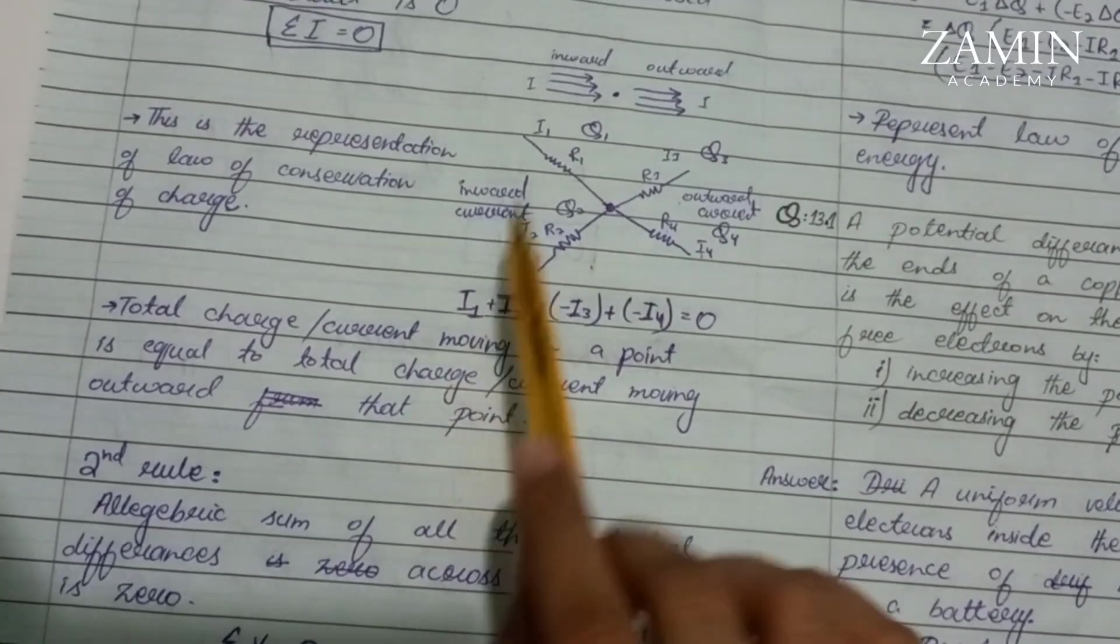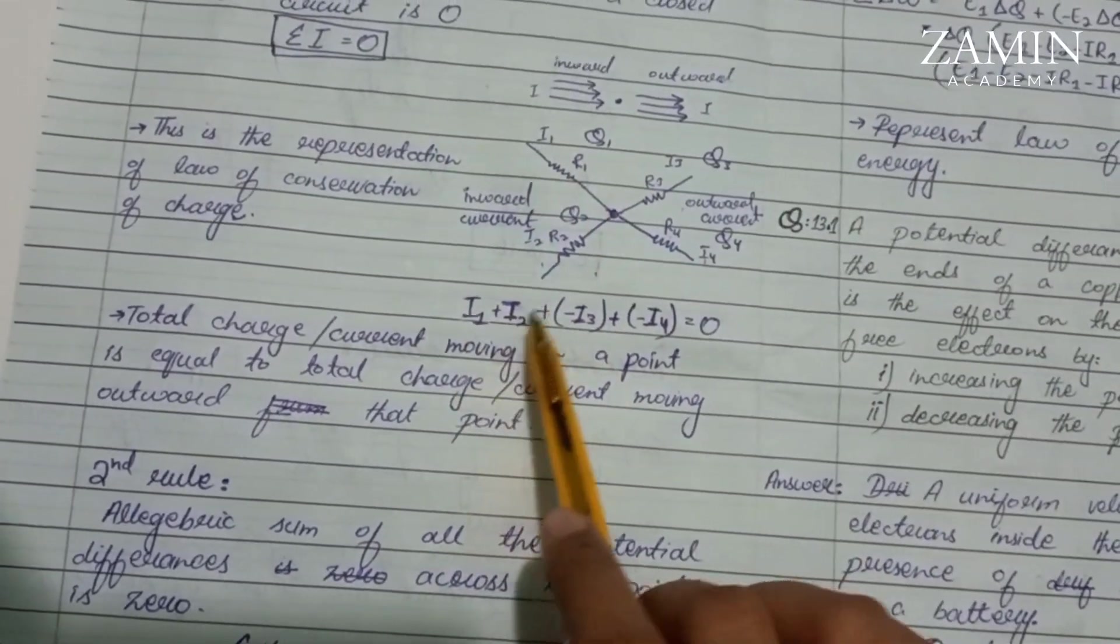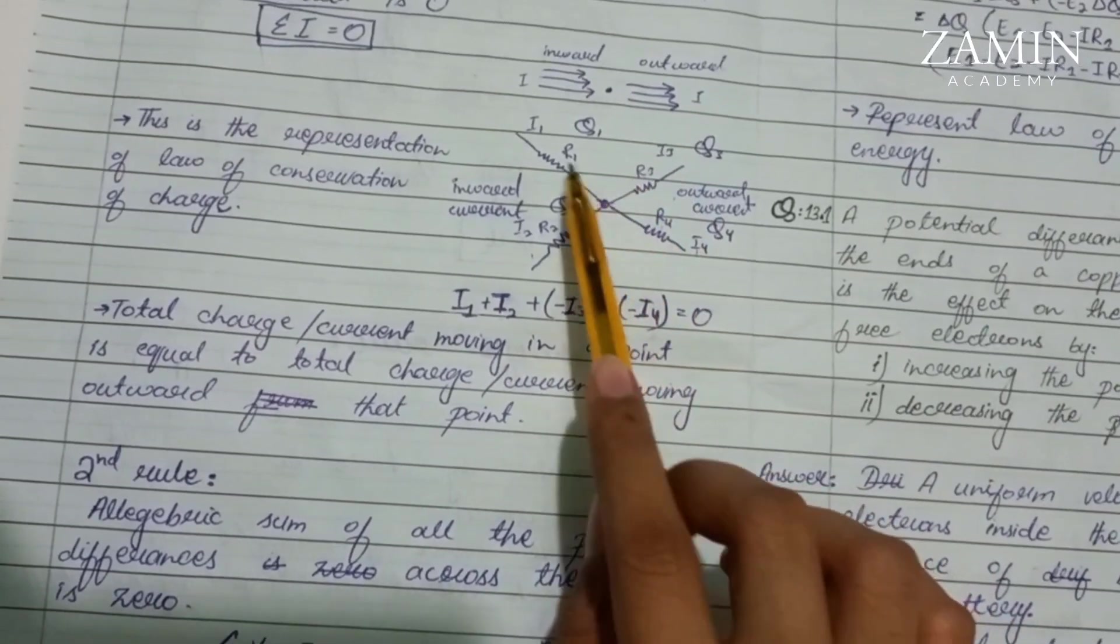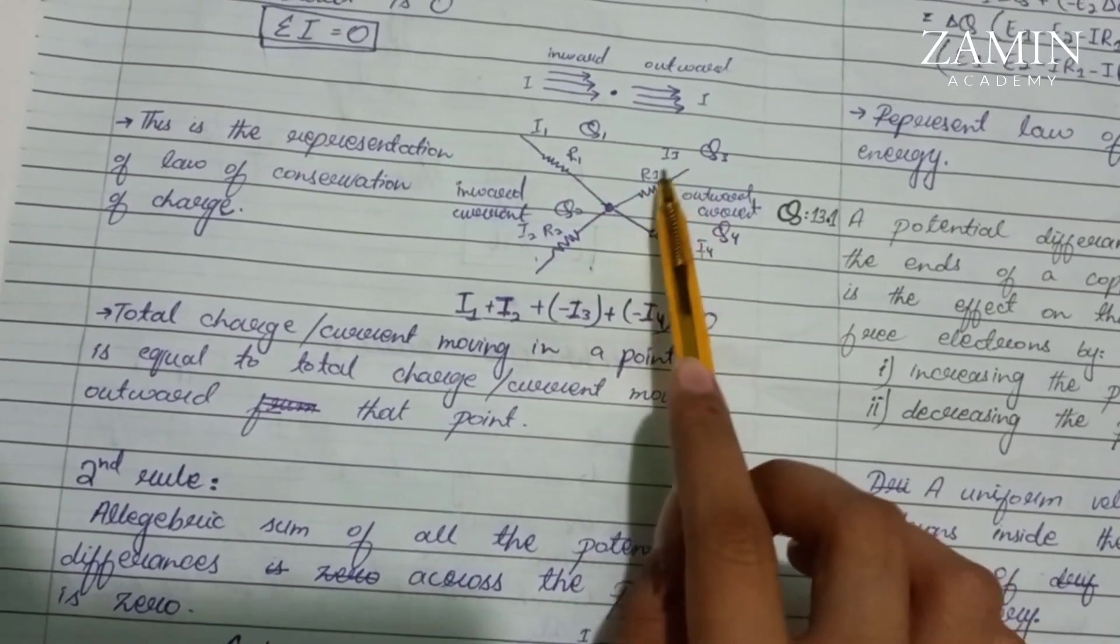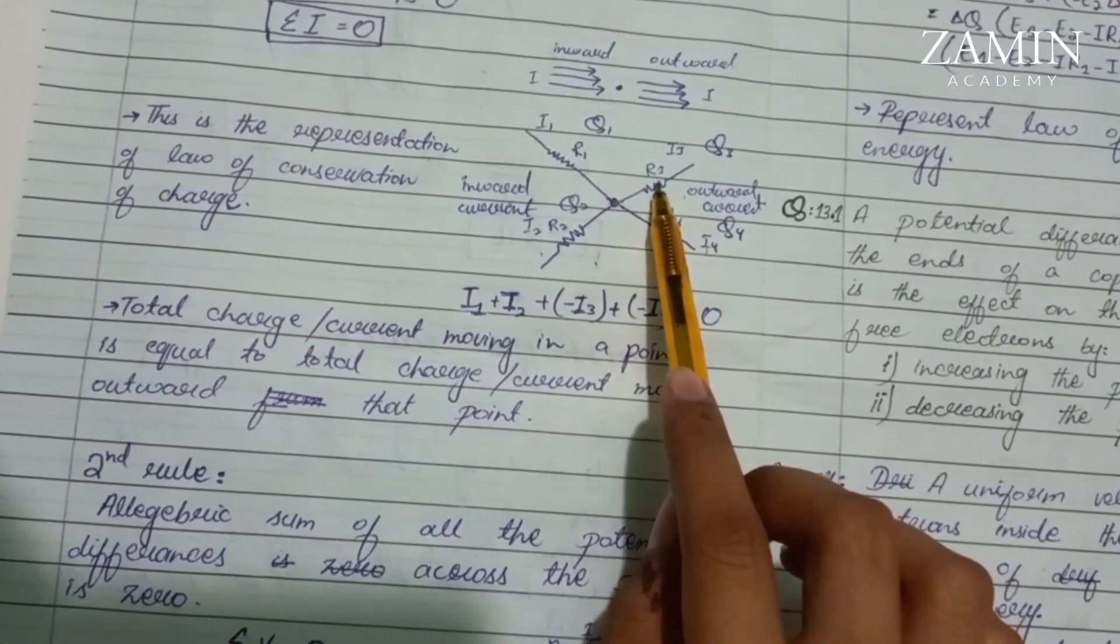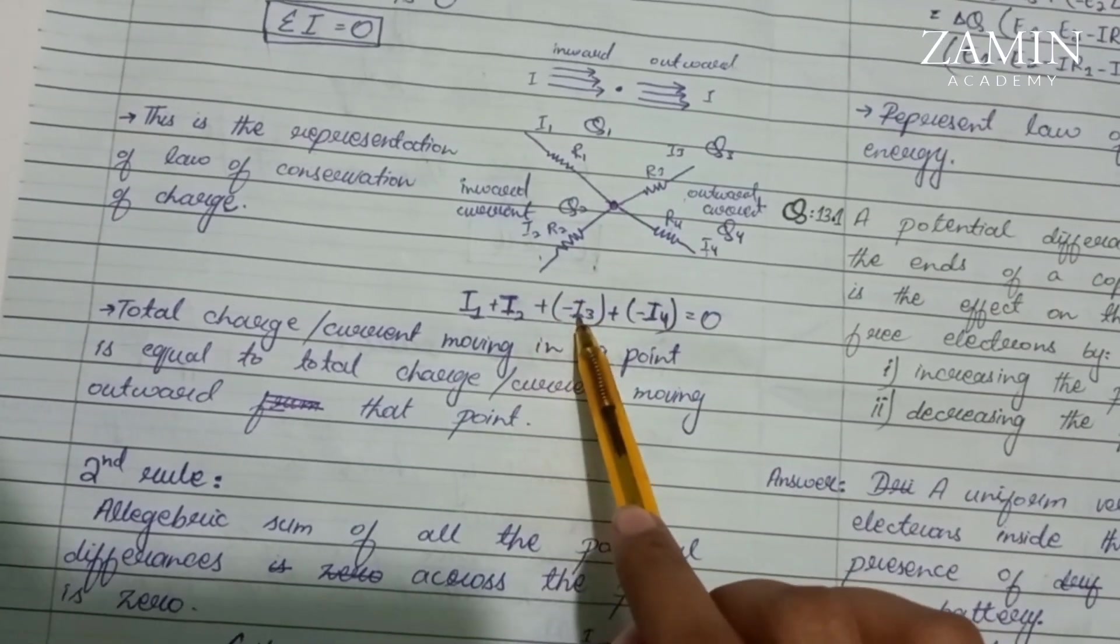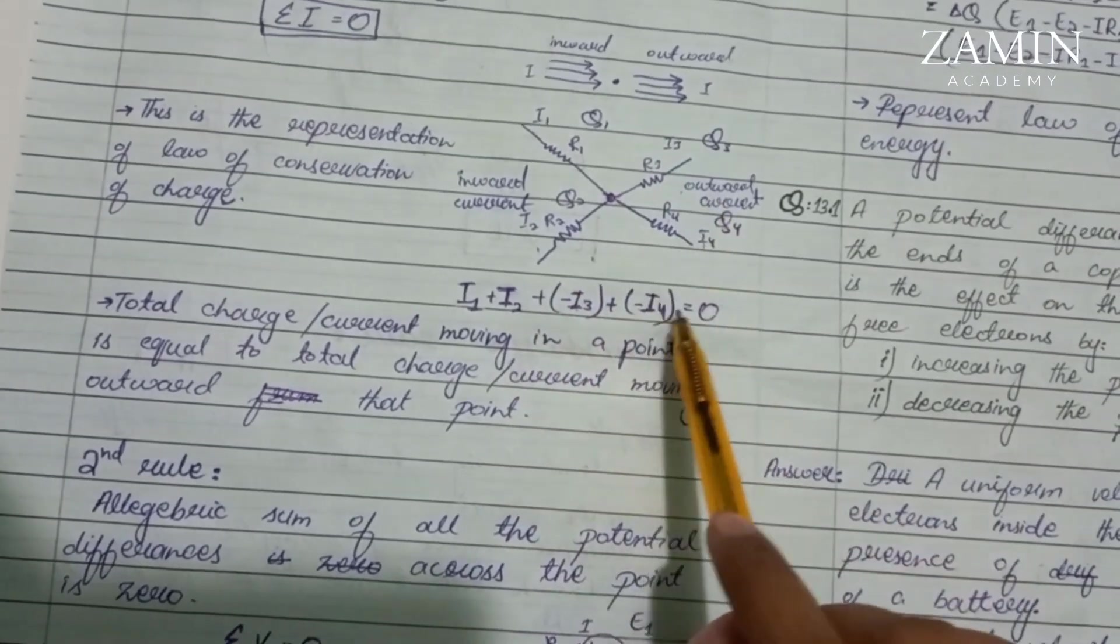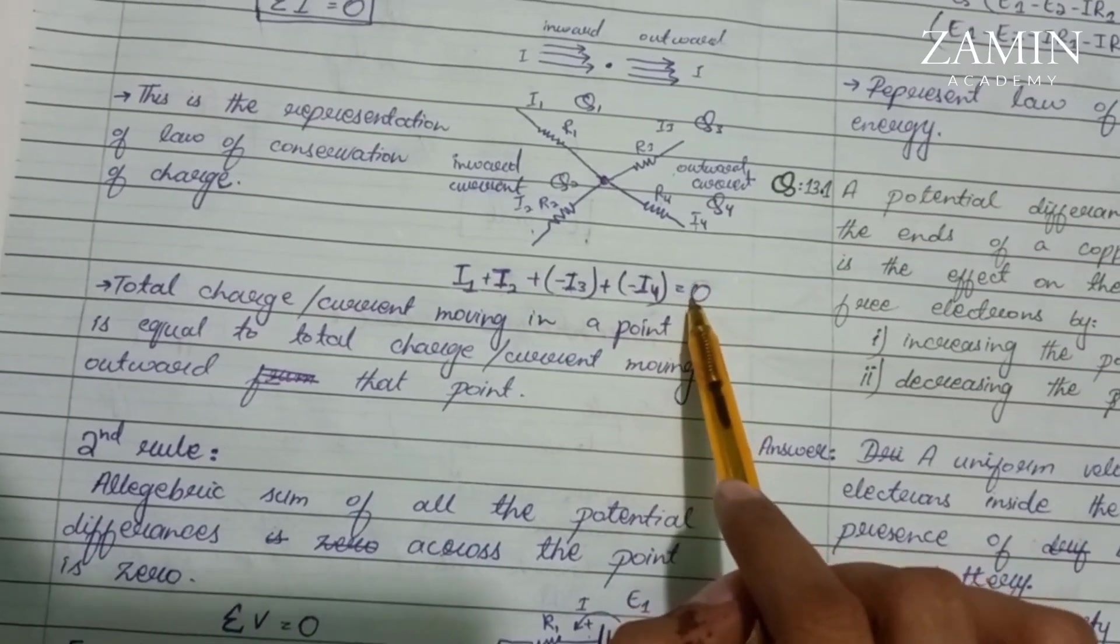If we write i1 plus i2 plus i3, then for the opposite side we put minus i3 plus minus i4, it would be equal to zero.